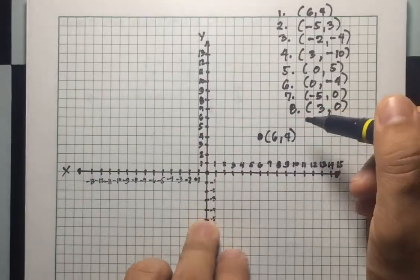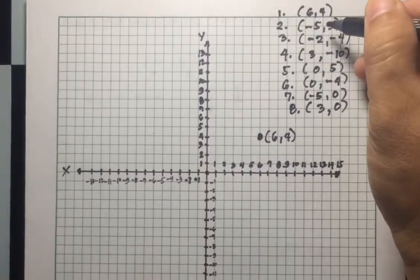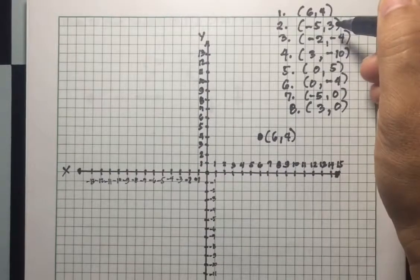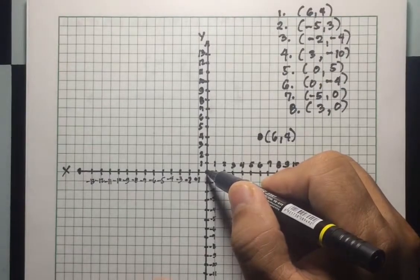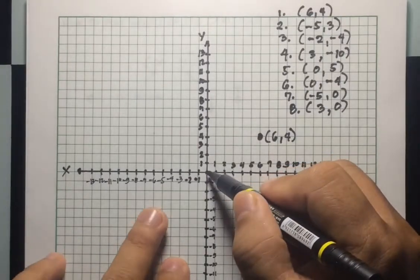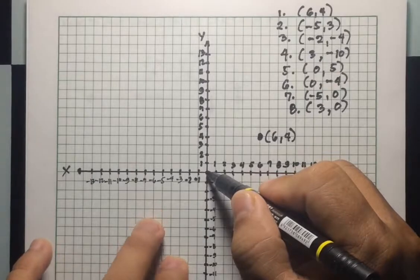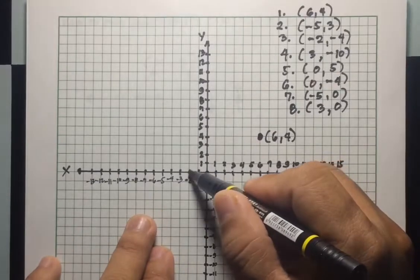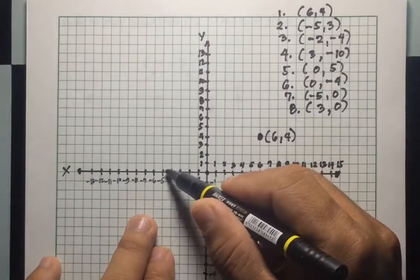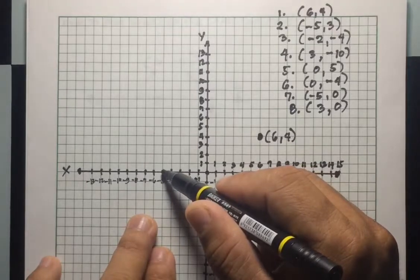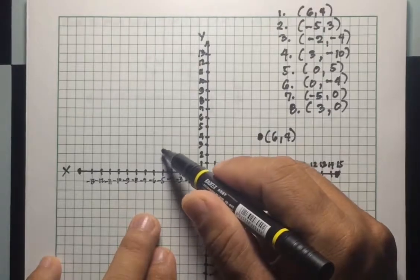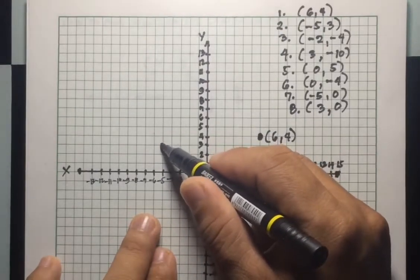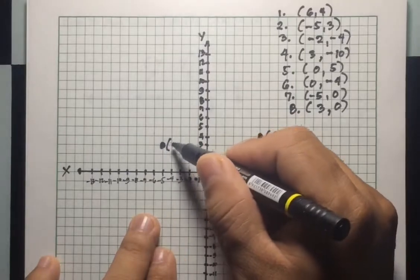For number two, the point is (-5, 3). Starting from the origin, X is negative five so move towards the left five units: one, two, three, four, five. Y is three, positive, so move up three units: one, two, three. This is point (-5, 3).